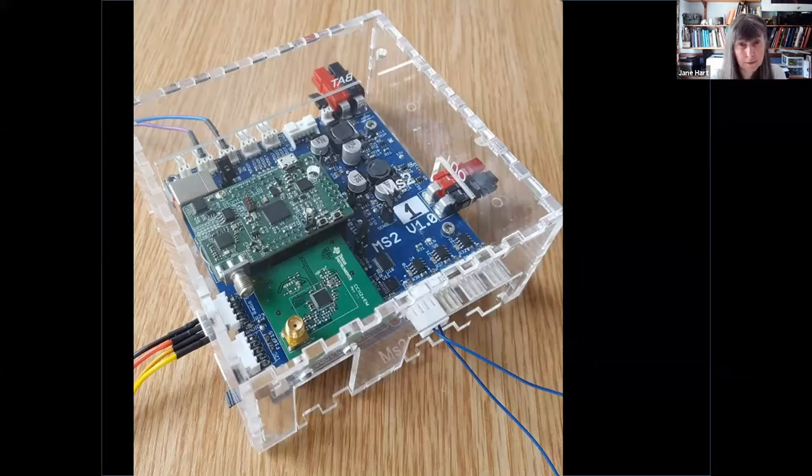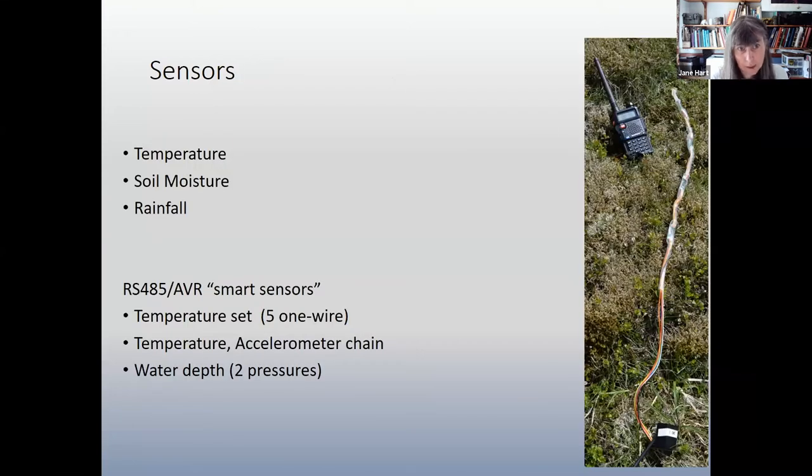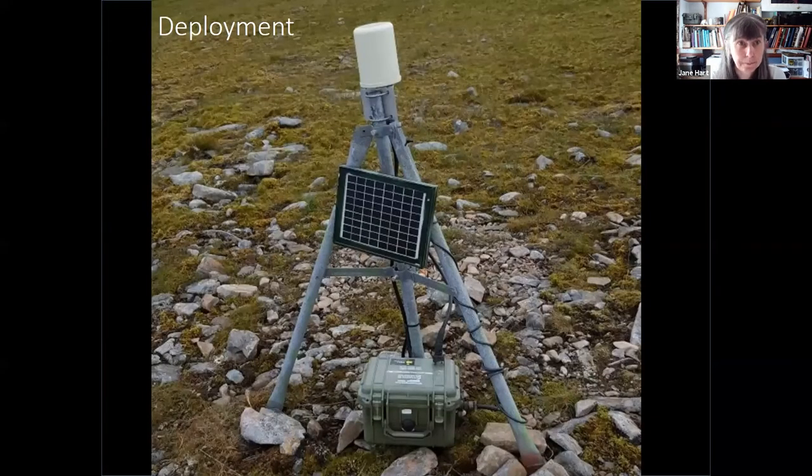So this is what one of our nodes looks like. You can see all the relative elements of it. And this is an overview of the sensor nodes. And we had sort of two sets of sensors. We had some very sort of typical off-the-shelf things. And then we developed some smart sensors where we were trying to look at how water pressure and temperature and tilt changed in the soil profile.